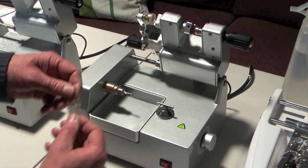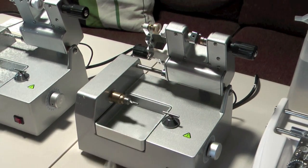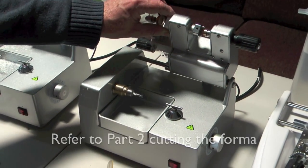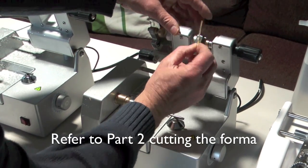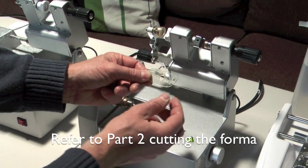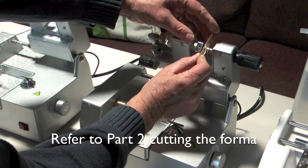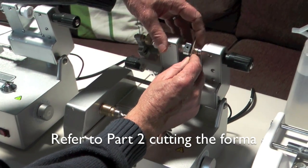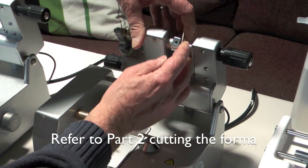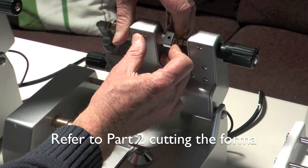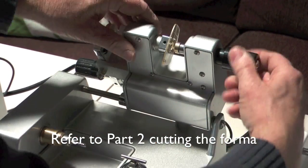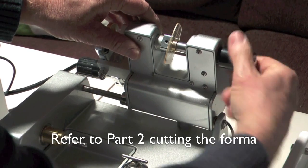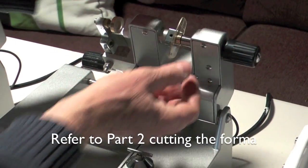So, the next stage is that we have to cut the lenses, and this is the lens cutter. We put the shape that we just created earlier on from the original lens that came out of the frame, and that just fits on. It's quite firm, but that will go on there, and that will provide the shape that we need.